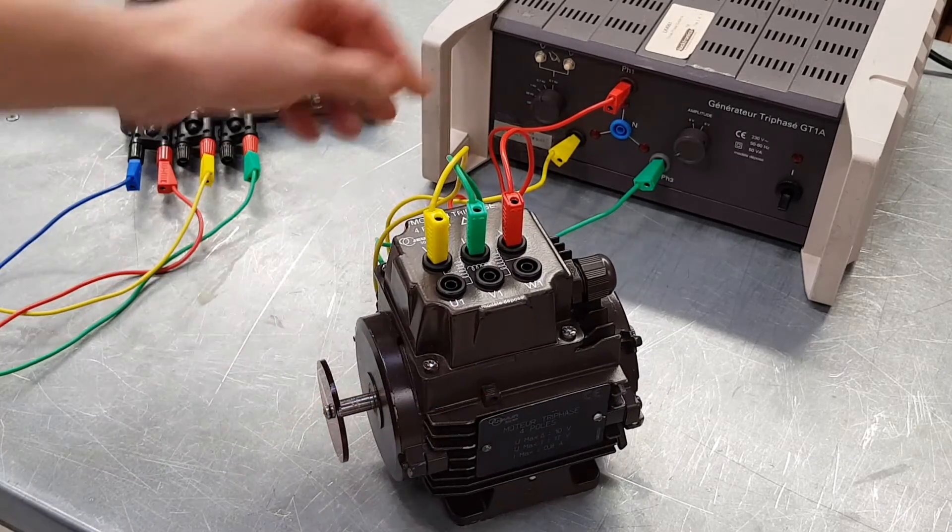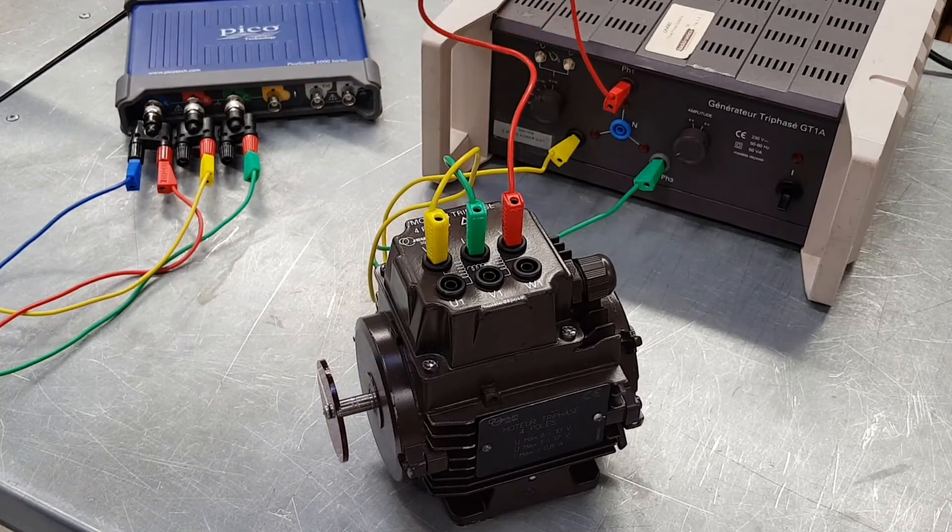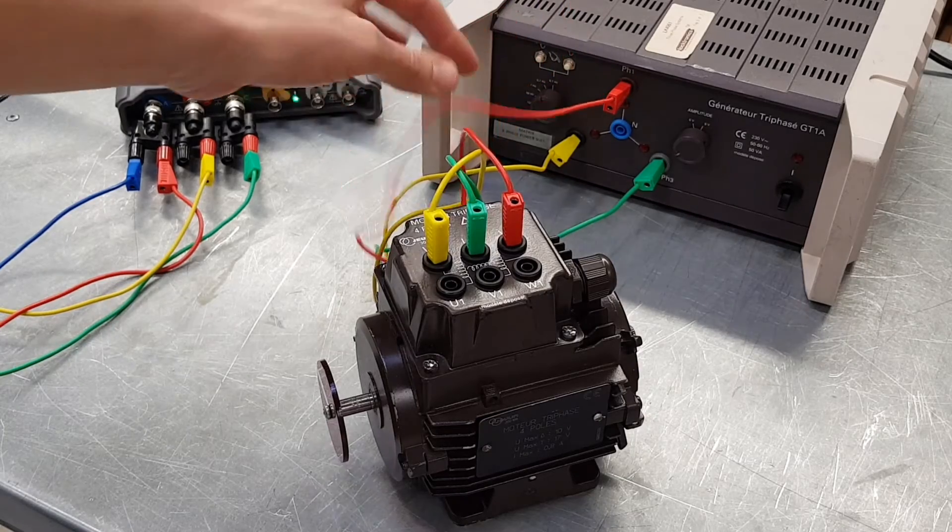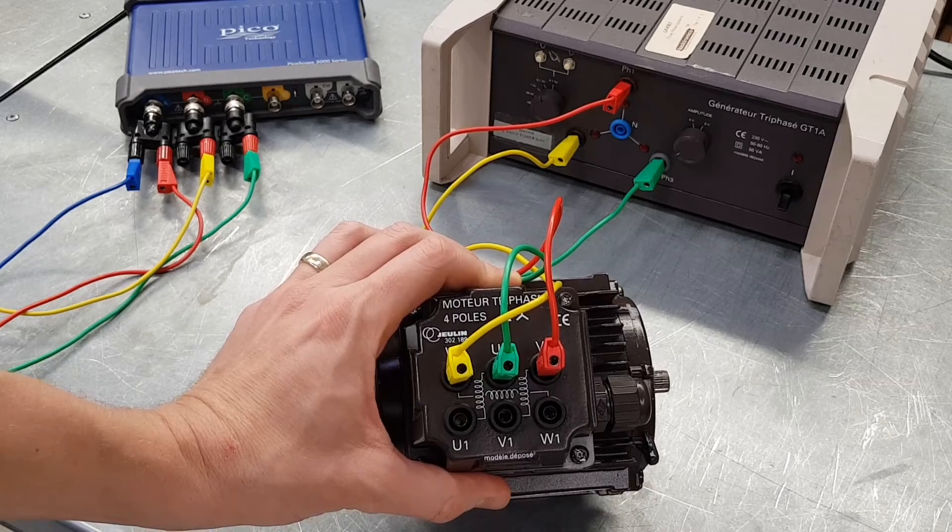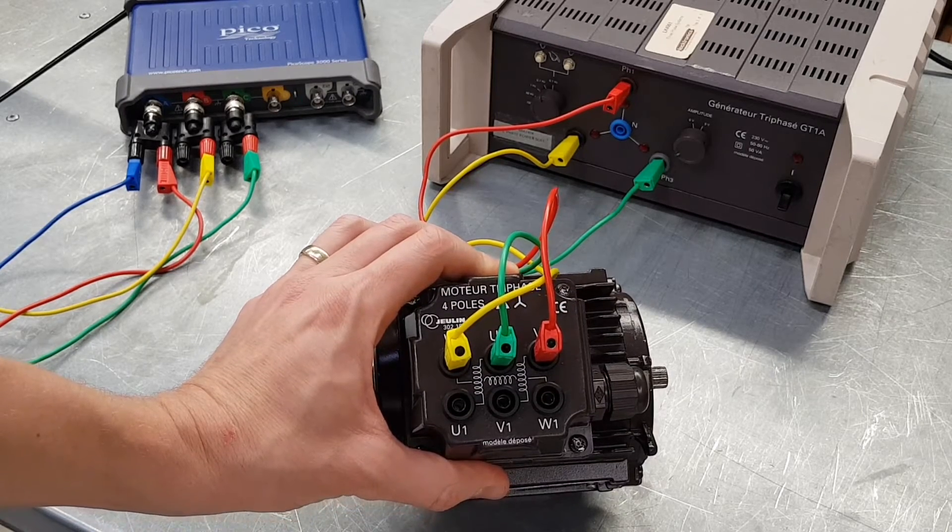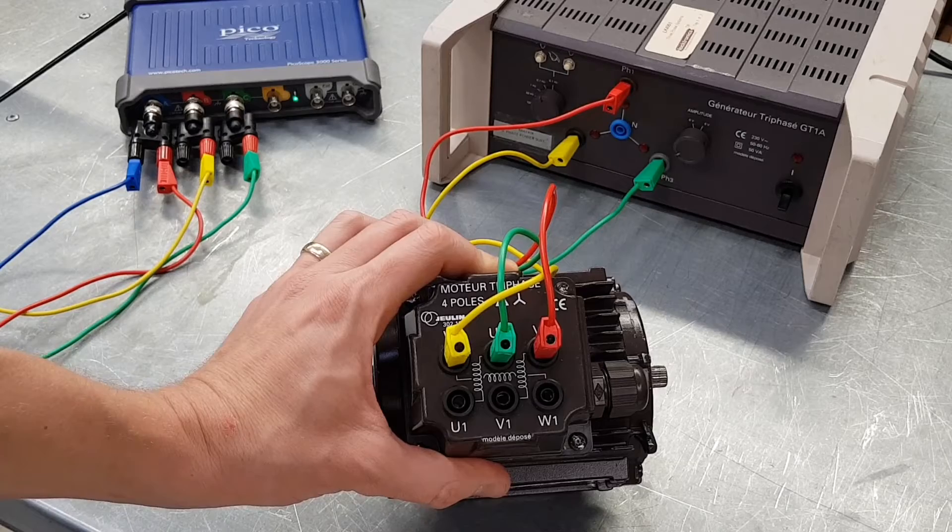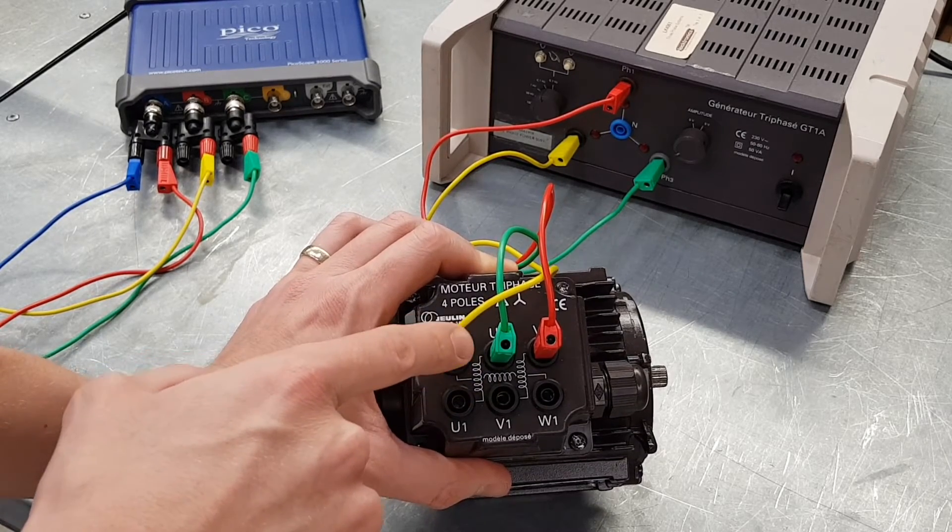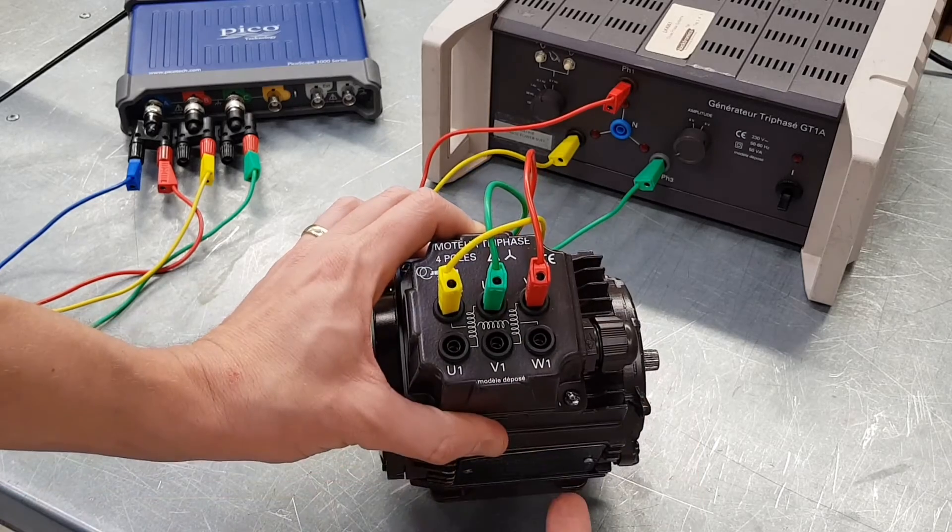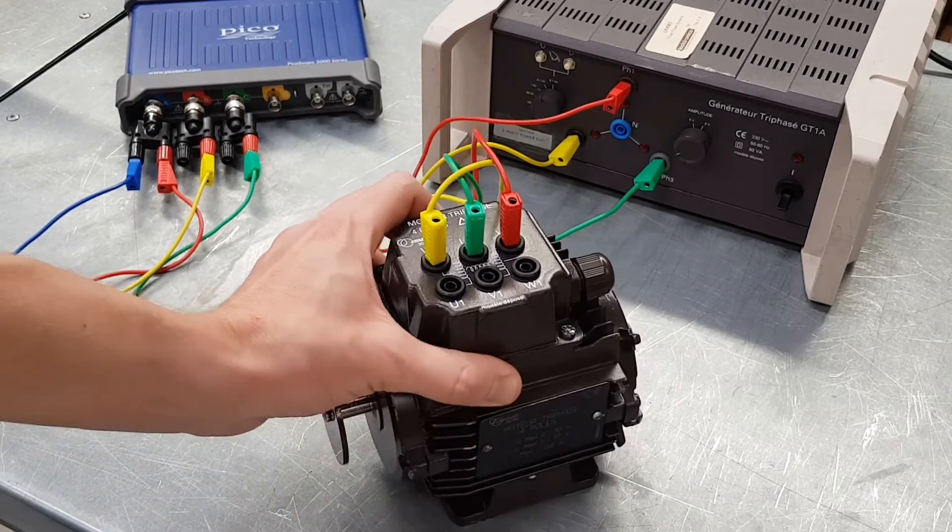What we've got here, as you can see, we've got our three line conductors coming out of our three-phase supply and they connect into our three-phase motor. Obviously, this is a teaching aid. On a normal motor, we'd have to take the lid off and do the connections inside. We're connecting into one side of three coils that sit inside the body of the motor.